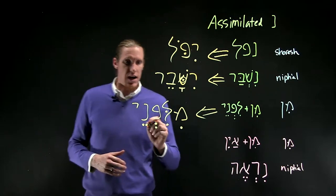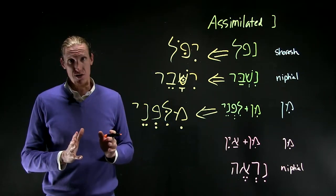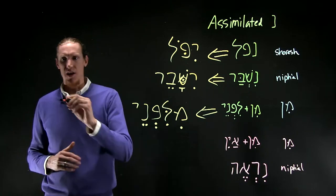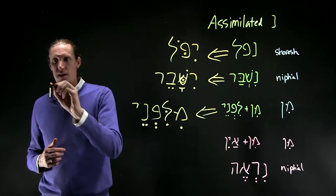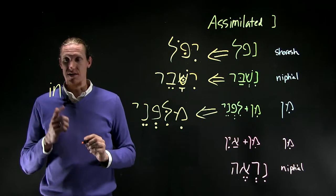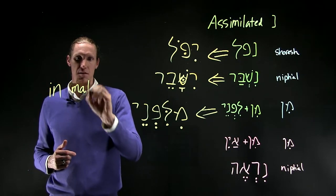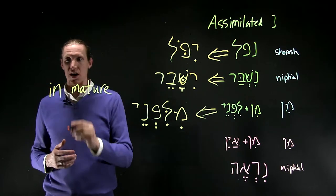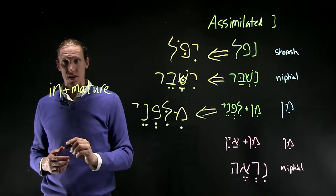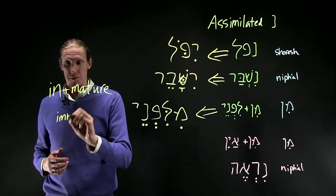So it works the same way in English, actually. If you take the word immature, in root form it's in and mature, meaning not and mature. If you put those two together, you have immature.